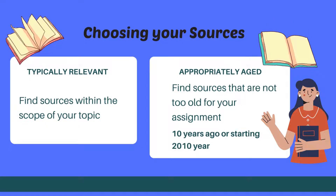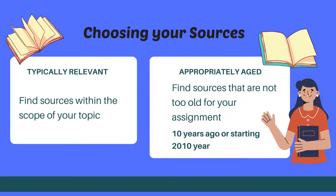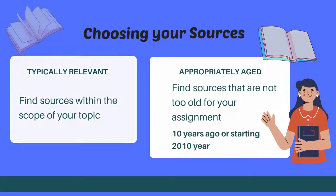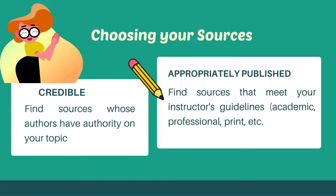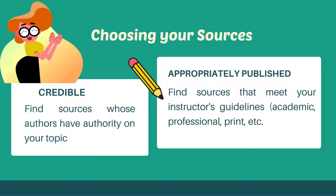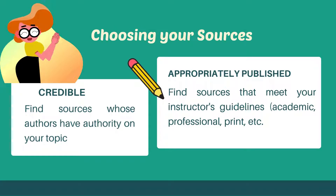Topically relevant: find sources within the scope of your topic. Appropriately aged: find sources that are not too old for your assignment. For our research paper, the ideal and acceptable year range is starting from the year 2020. Credible: find sources whose authors have authority on your topic. Appropriately published: find sources that meet your instructor's guidelines — academic, professional, print, etc.